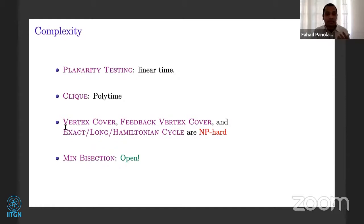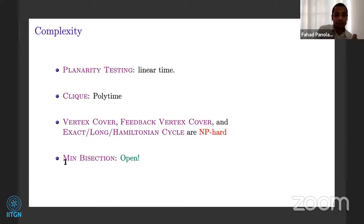Given an adjacency list or adjacency matrix of a graph, testing whether that graph is planar or not is called planarity testing, and that can be done in linear time — order N time. For all the problems I listed — vertex cover, feedback vertex set, exact or long or Hamiltonian cycle — these are all NP-hard problems. One of the problems I mentioned, minimum bisection, we don't know whether it is in poly time or NP-hard on planar graphs. So that question is still open.